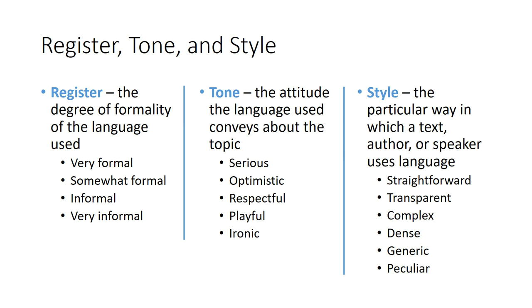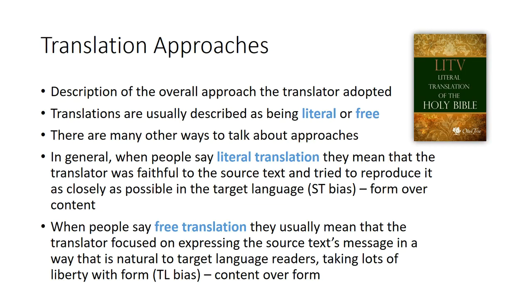Style is the particular way in which a text, author, or speaker uses language. You can characterize style with words like straightforward, transparent, complex and dense, or corporate and generic. If you're reading a novel by Mark Twain, you can identify a very individual and peculiar style. Style is the way a text, author, or speaker tends to use language.